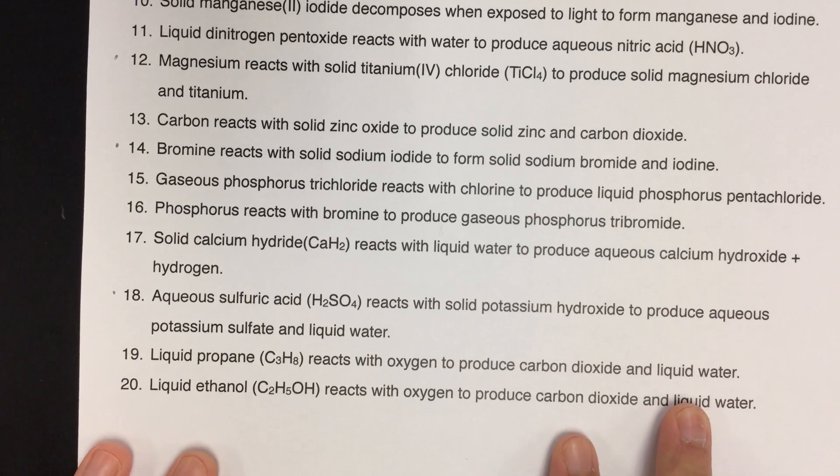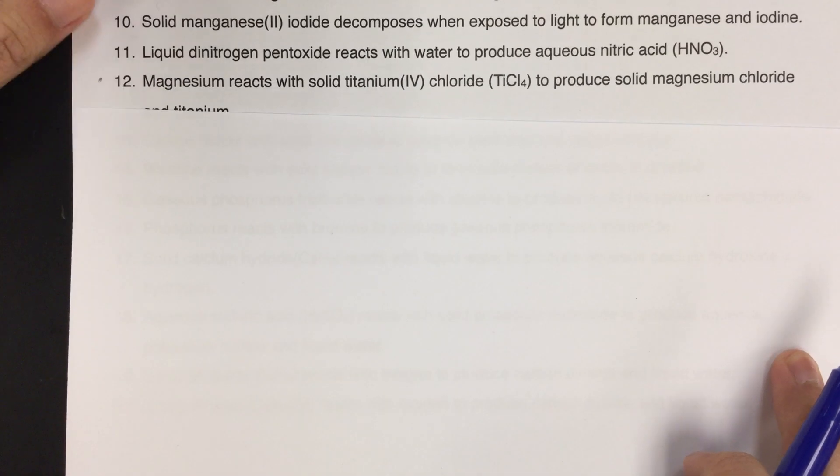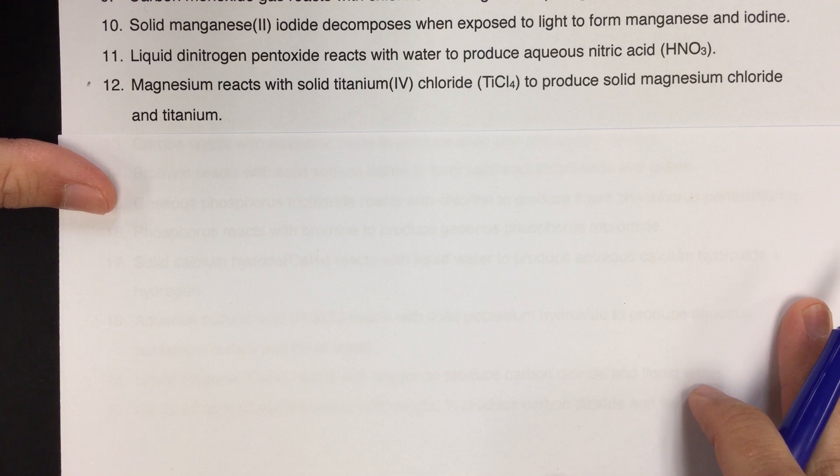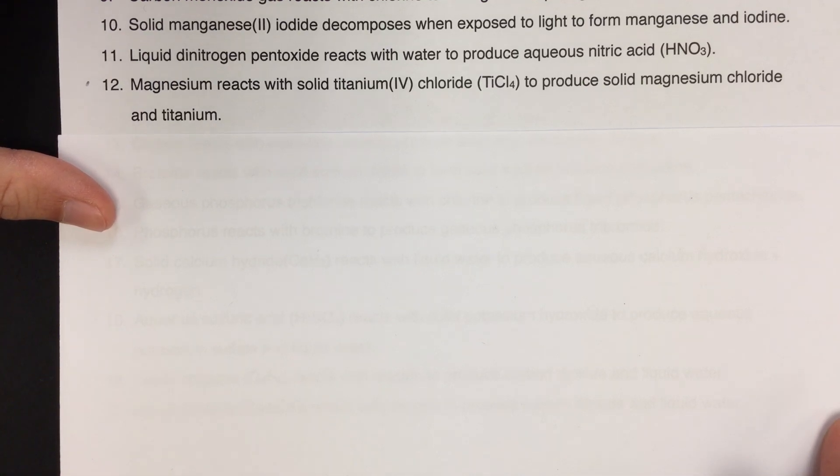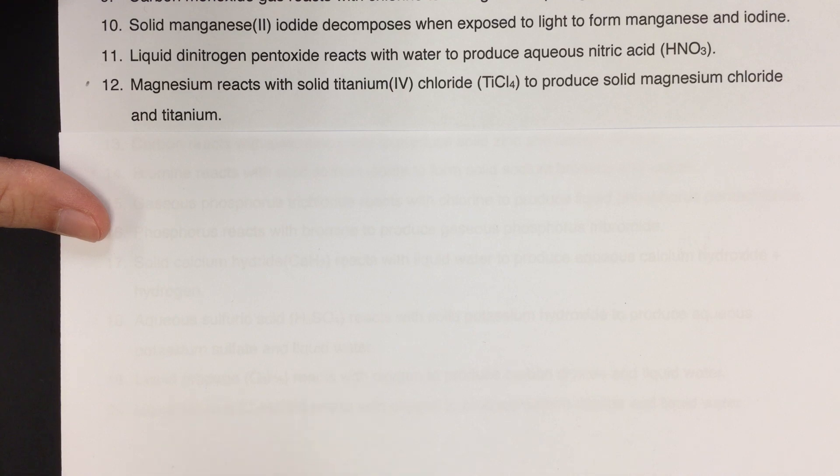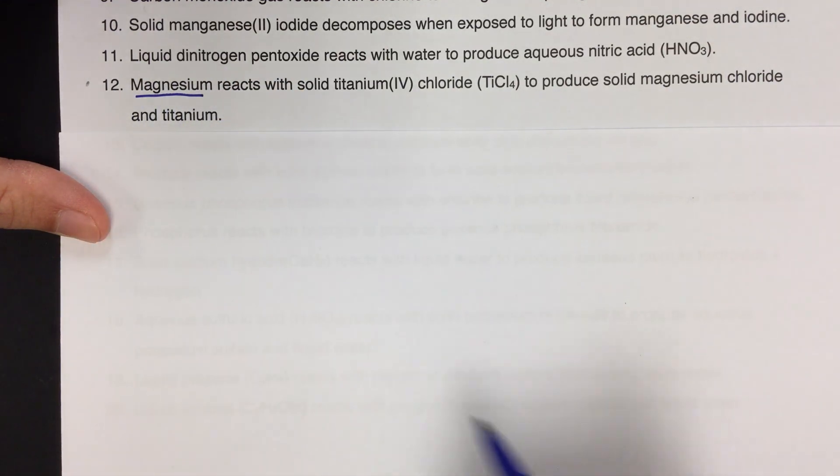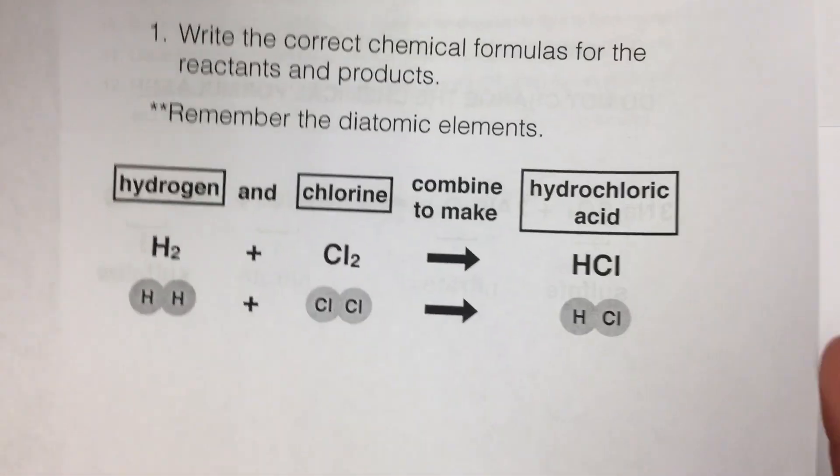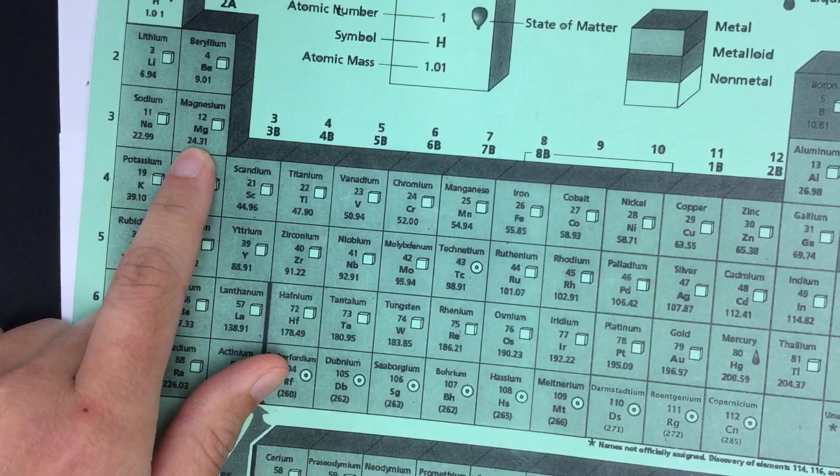I'm going to do a couple of these starting with number 12 and I'm going to do this on a separate piece of paper. The goal here is to translate this sentence into a balanced chemical equation. Number 12 tells us that magnesium reacts with solid titanium chloride to produce solid magnesium chloride and titanium. I'm going to pick out the important terms here. Magnesium is going to be one of our reactants. Remember, that's the first rule - we need to make sure we write the correct chemical formulas for everything. So magnesium is just an element, so its formula is just Mg.